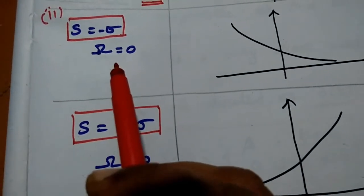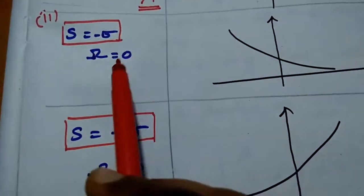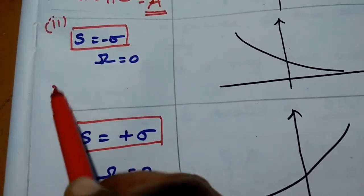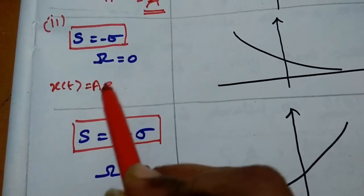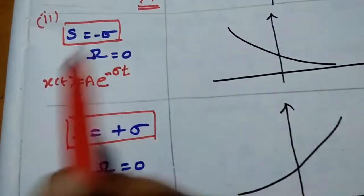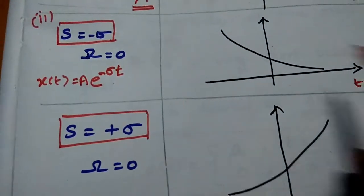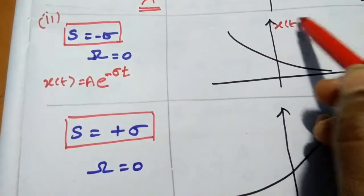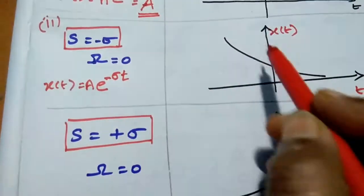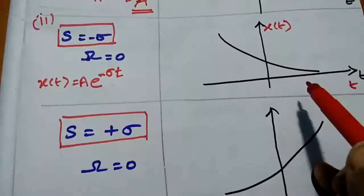Case 2: s = -sigma, meaning omega = 0 — there is only the real part. Then x(t) = A·e^(-sigma·t). Due to the negative sigma value, this is an exponentially decreasing signal.